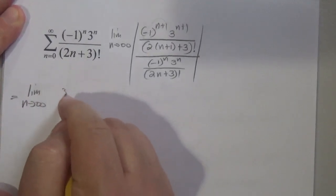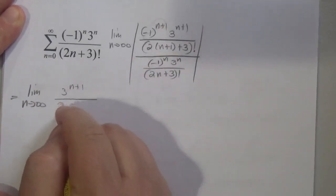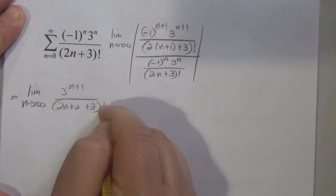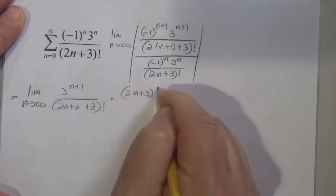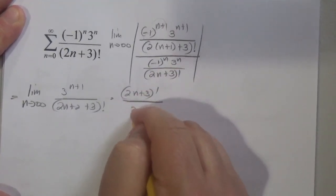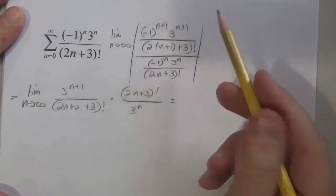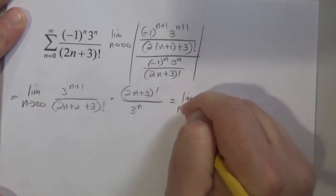n goes to infinity of 3 to the n plus 1, over, I'm just going to do a little distributing here, (2n + 2 + 3) factorial, times (2n + 3) factorial, all over 3 to the n.